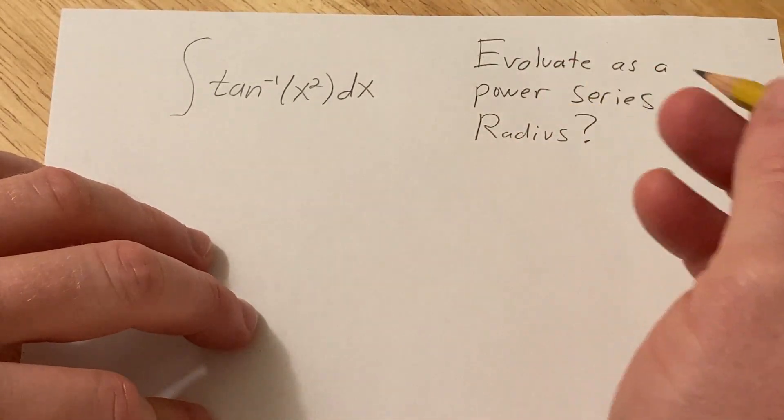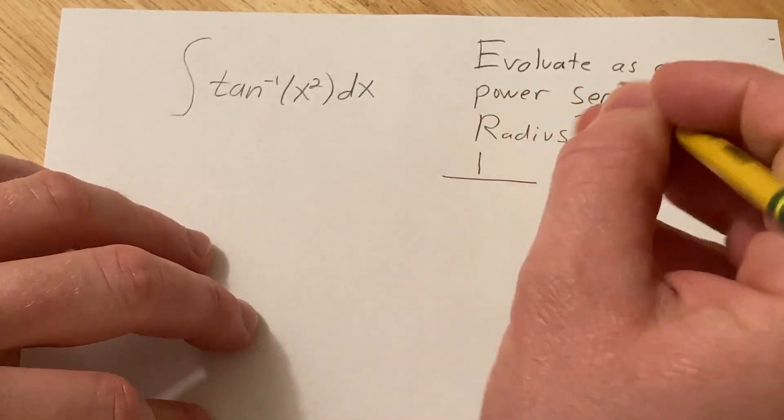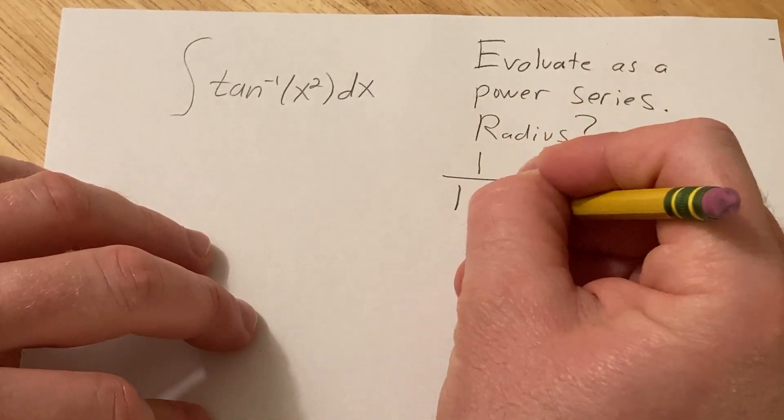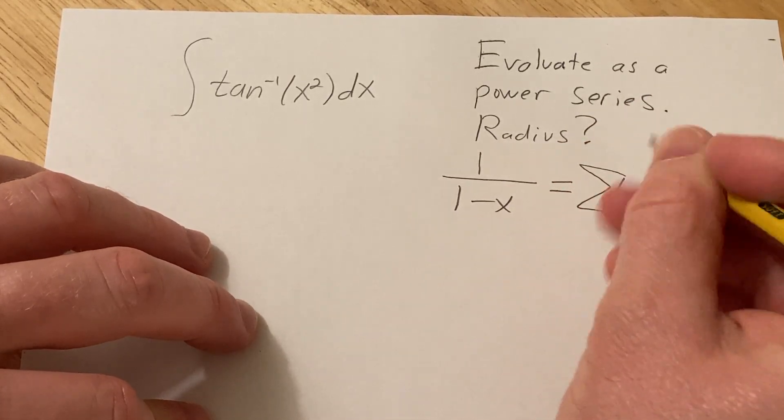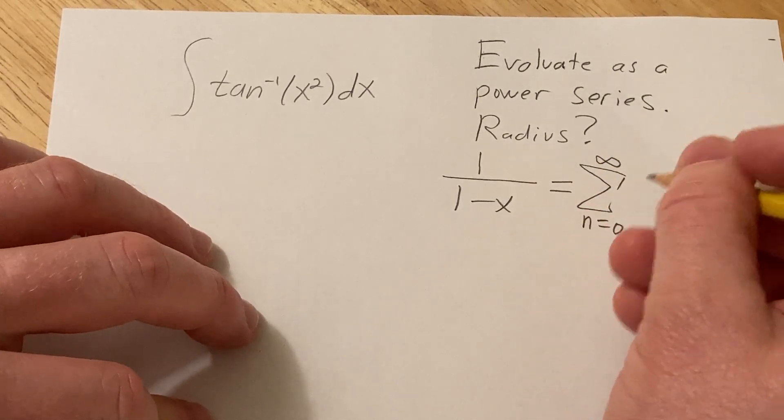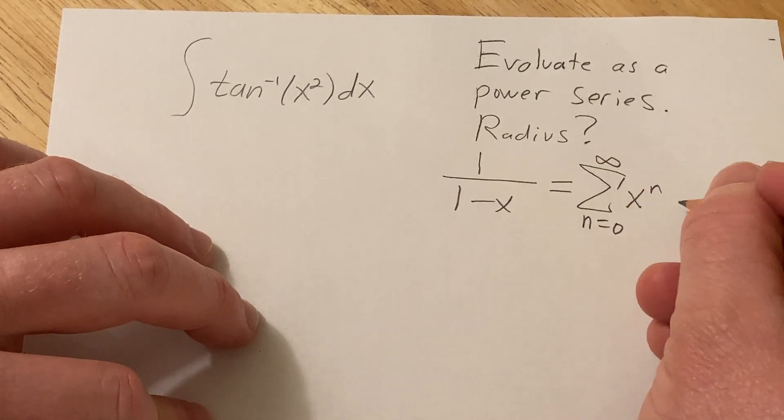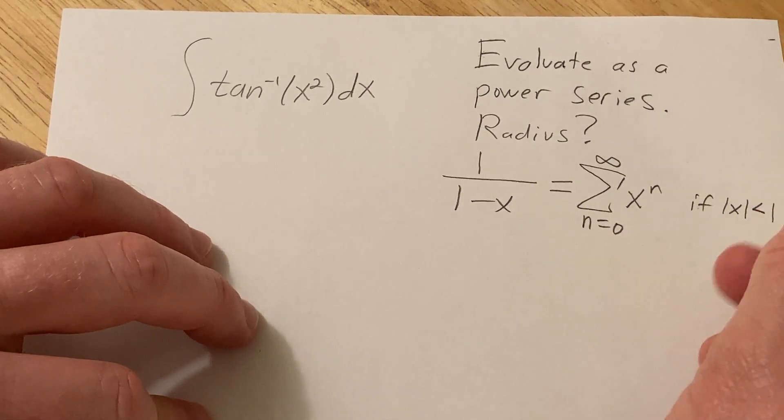So first recall the formula that we usually use in these problems. It says if you have 1 over 1 minus x, this equals the infinite sum as n runs from 0 to infinity of x to the n, and this formula is valid if the absolute value of x is less than 1.